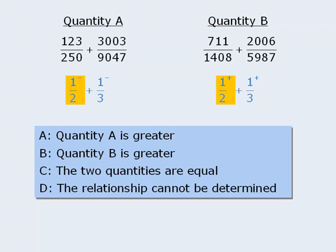When we compare these two fractions that are close to one half, we see that this one is bigger. And when we compare these two fractions, this one is bigger. Since both numbers in the quantity B sum are bigger than both numbers in the quantity A sum, quantity B must be greater. In which case, the correct answer here is B.